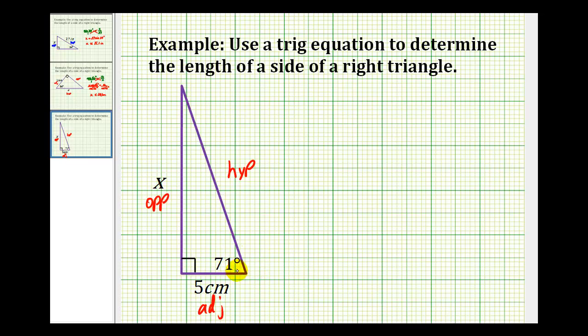We want the trig function that involves the opposite side and the adjacent side, which is the tangent function. The tangent of 71 degrees equals the ratio of the opposite side to the adjacent side, so x over 5.